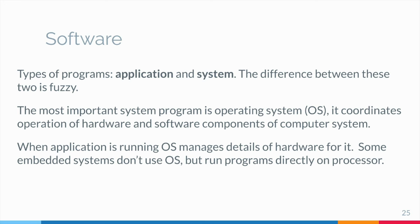When an application program is running, the operating system manages the details of the hardware for it. For example, when you type characters on the keyboard, the operating system determines which application program they are intended for and does the work of getting them there.